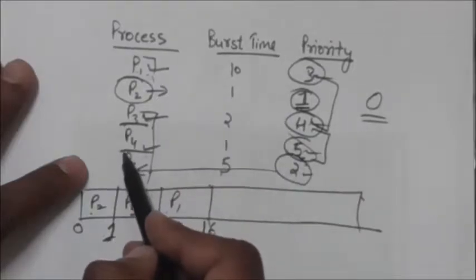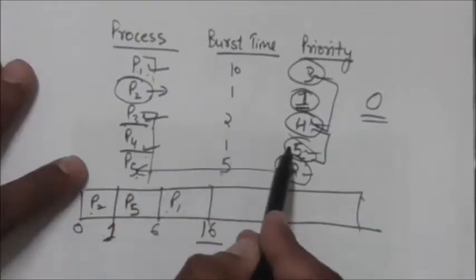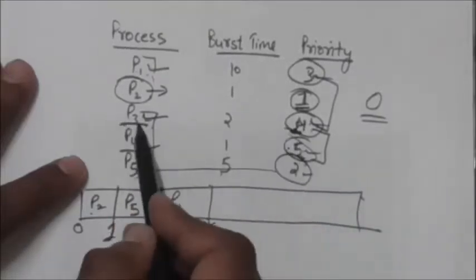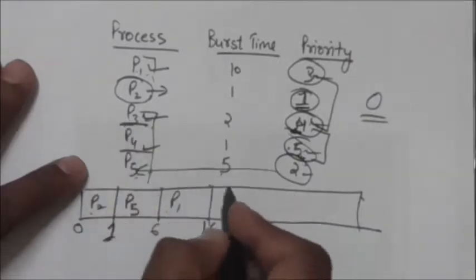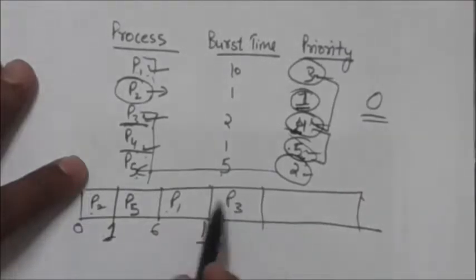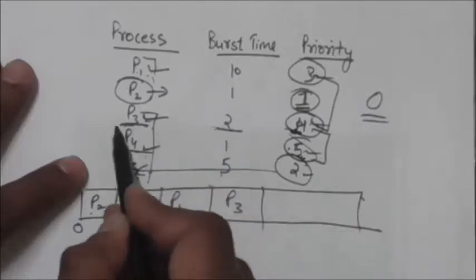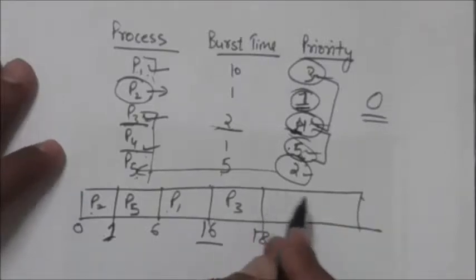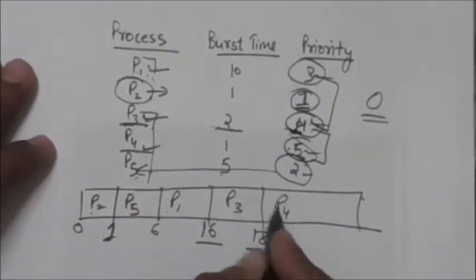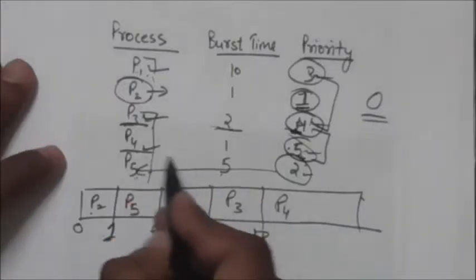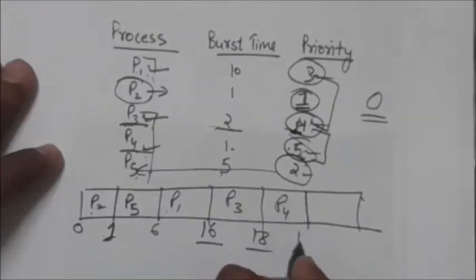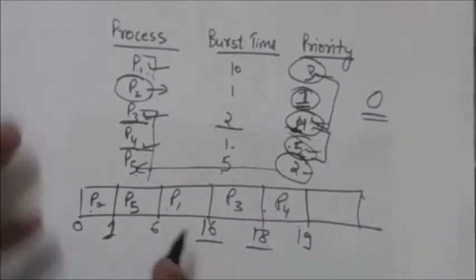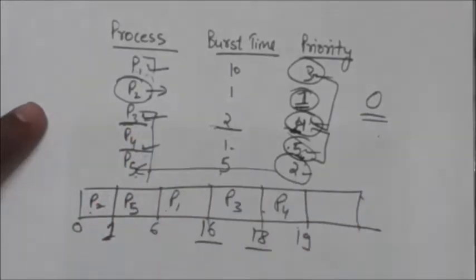Now only P3 and P4 are left. Priority of P3 is indicated by number 4 and priority of P4 by number 5. Since 4 is lowest, P3 has higher priority. The CPU is allocated to P3 at time 16; its burst time is 2, so P3 releases the CPU at time 18. Then P4 gets the CPU at time 18 and releases it at time 19.